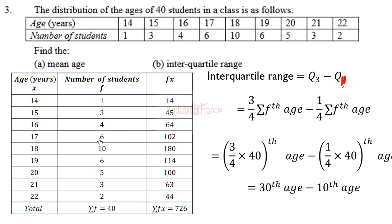So that means that the 10th item, the 10th age, corresponds to 17. The 10th age corresponds to 17.